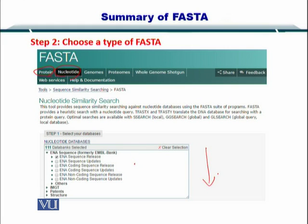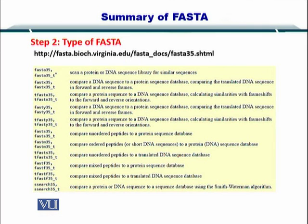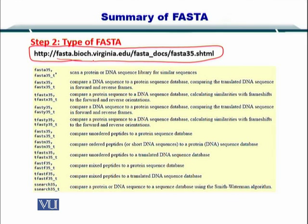First, you have to select the database as well. In this case, it's a nucleotide search, so you select the ENA or the EMBL bank database. You also select which type of FASTA — that is, which Fast Alignment Algorithm — you want to use. You can go to this link at virginia.edu and select which type of FASTA you want to employ. The details are given there.